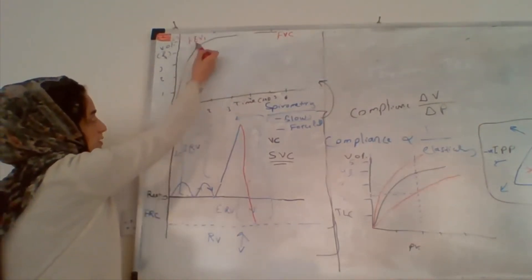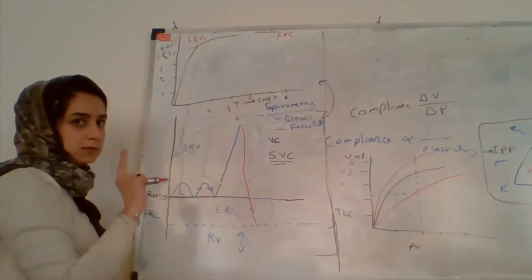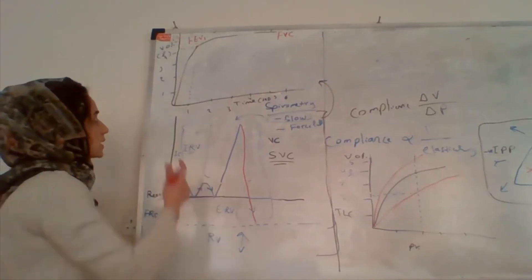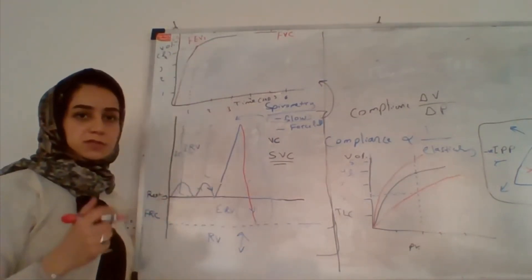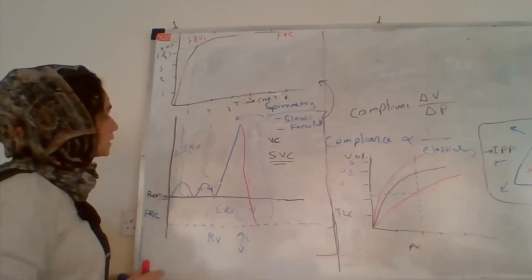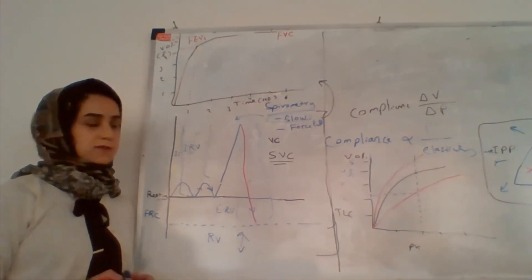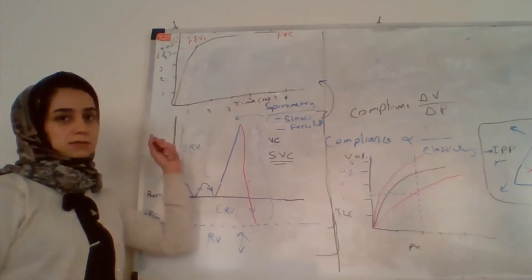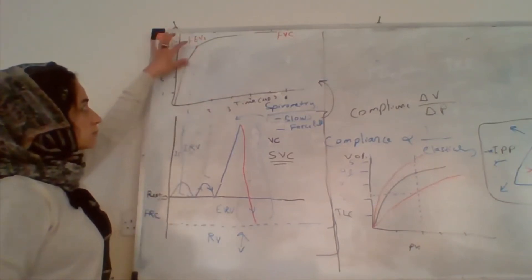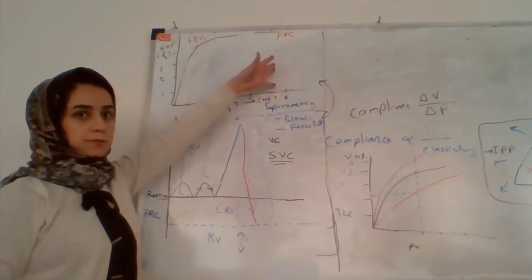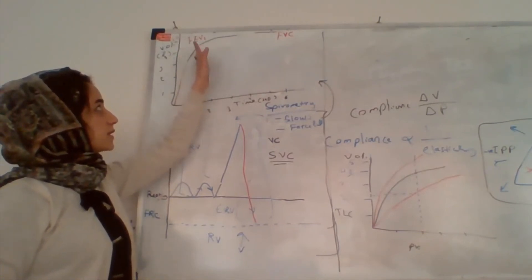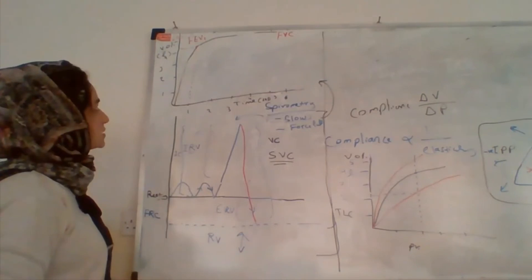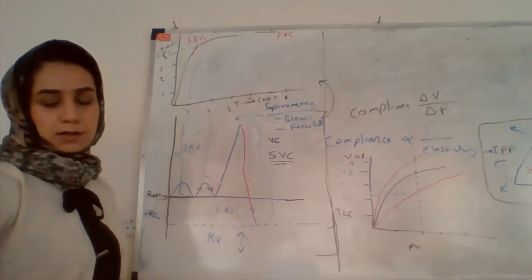FEV1 is the volume of air forcefully expired in the first second. Normally, about 80% of the air can be expired in the first second. To find whether flow is affected, we look at the percentage of air expired in the first second relative to the total. We calculate this by dividing FEV1 by the FVC and multiplying by 100 to get the percentage. This gives us the FEV1/FVC ratio, which is very important.